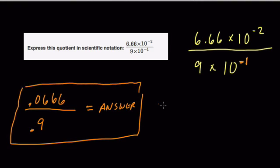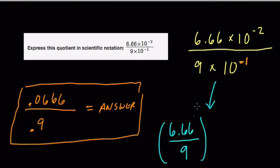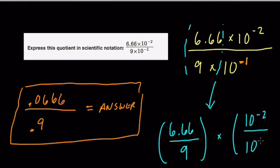But what we want you to start to do is realize how we can use different properties, how we can use the associative and commutative properties to mess around with these so that what we end up doing is 6.66 divided by 9, just divide those two first factors and then multiply that by the quotient of the powers of 10. So you're going to try to do that in all these examples to envision this.